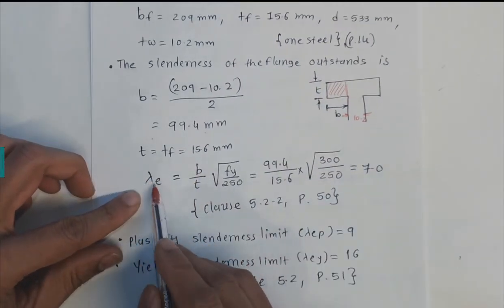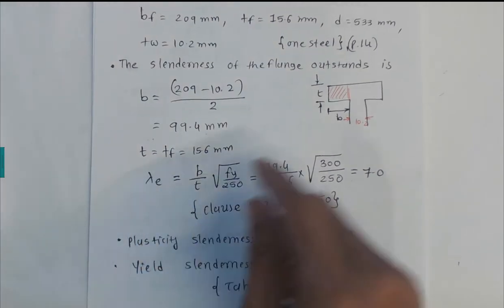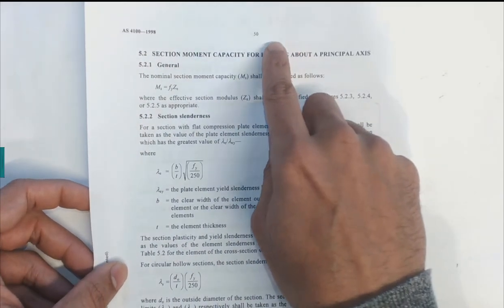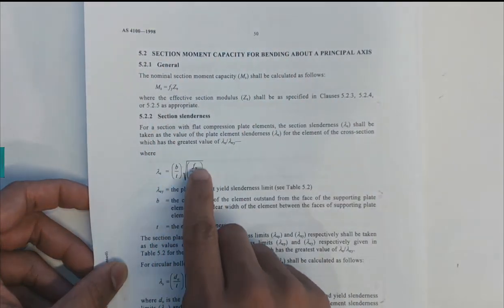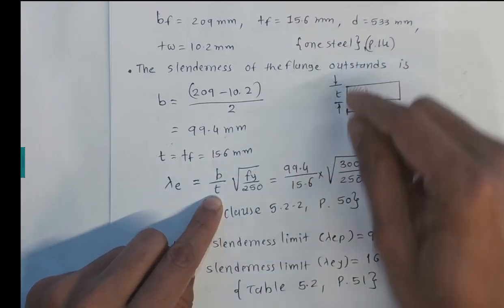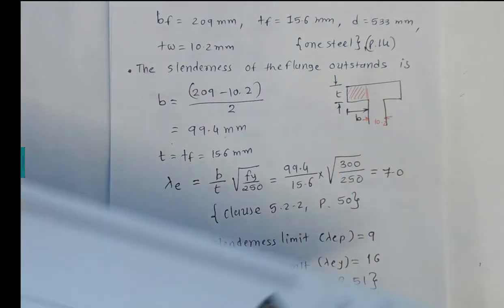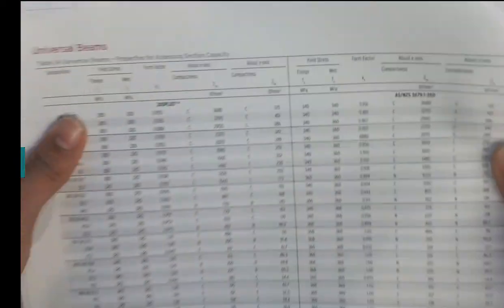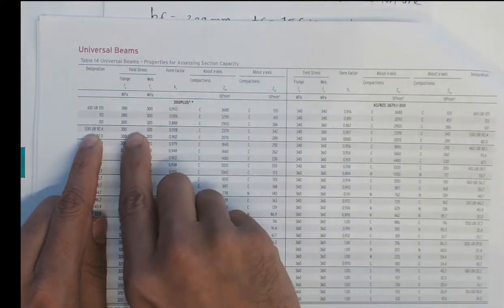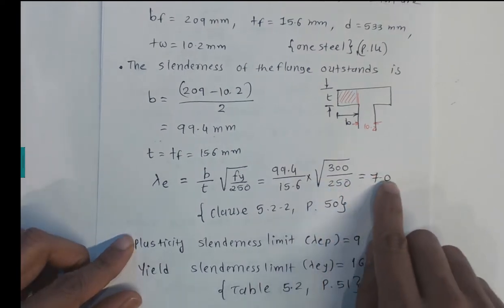The slenderness equation for the flange is given in AS4100 Section 5.2.2, page 50: λ_E = (B / TF) × √(FY / 250). With B = 99.4 mm, TF = 15.6 mm, and FY = 300 MPa (from OneSteel tables page 15 for the flange), the calculated slenderness is λ_E = 7.